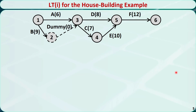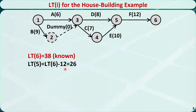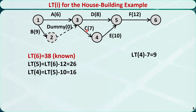Now assume that we know the late time of node 6 is 38 — it is the end time of the entire project. For node 5, the late time equals the late time of node 6 minus the duration of activity F, which is 26. For node 4, the late time equals the late time of node 5 minus the duration of activity E, which is 16. For node 3, the late time has two options: the late time of node 4 minus the duration of activity C equals 9, and the late time of node 5 minus the duration of activity D equals 18. We pick the smaller value, 9, as the late time of node 3.